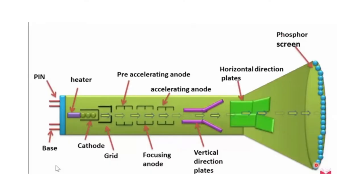Let's start. This is a CRT, that is cathode ray tube. Those in B.Tech will know it was used in the oscilloscope for displaying voltage frequency waveforms. Now we will see the functioning. First, let's look at the design components: pin, heater, cathode, grid, pre-accelerating anode, accelerating anode, focusing anode, vertical deflection plates, horizontal deflection plates, and phosphorus screen.